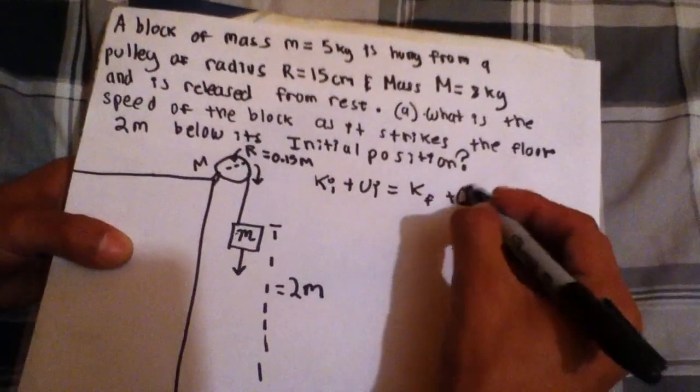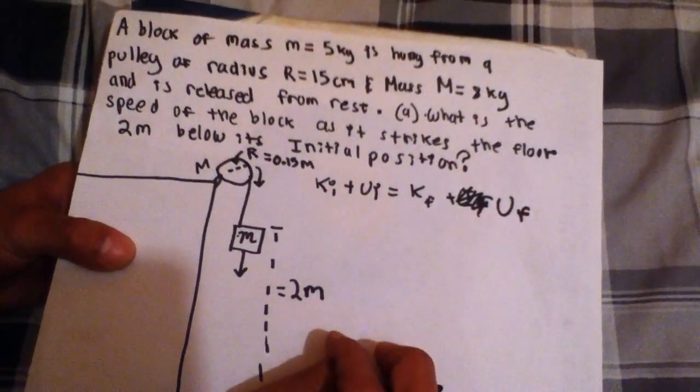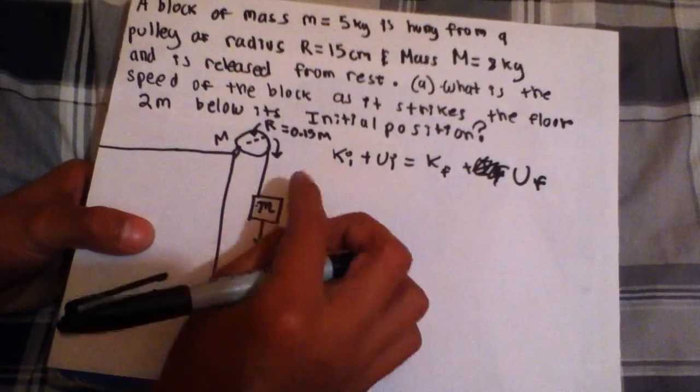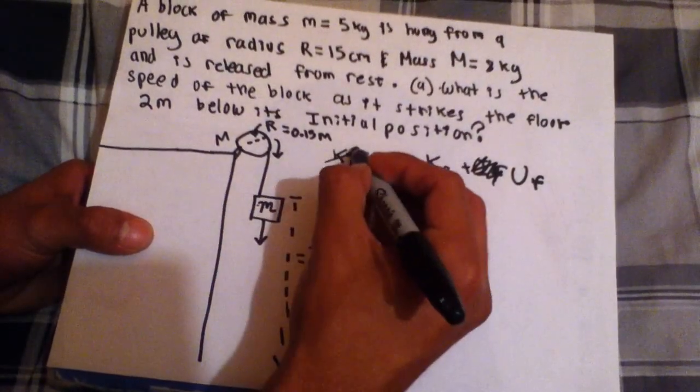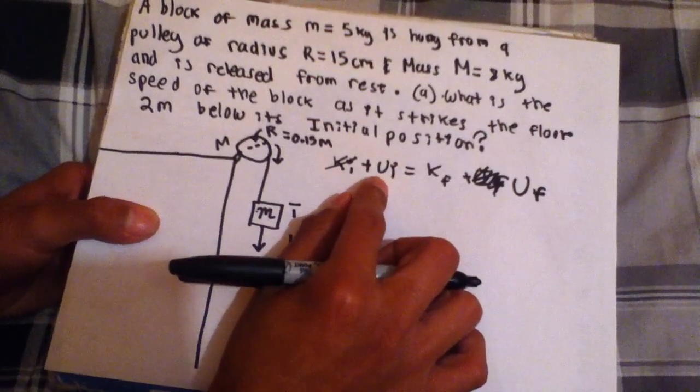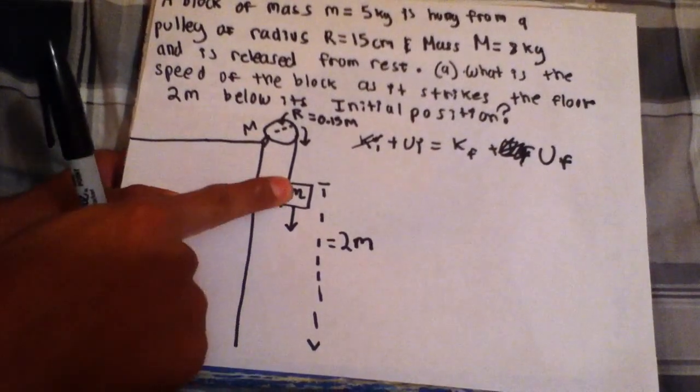UF, sorry. Alright, then again. Now we know that this is at rest, so there is no initial kinetic energy. And, however, there is potential energy. Why? Because this is 2 meters above and this has a certain mass.